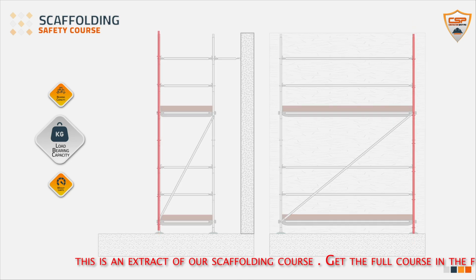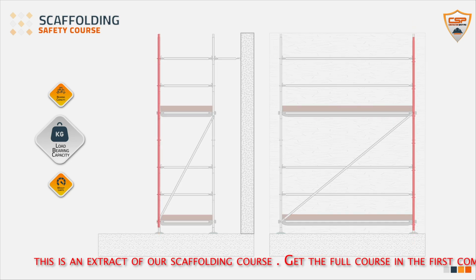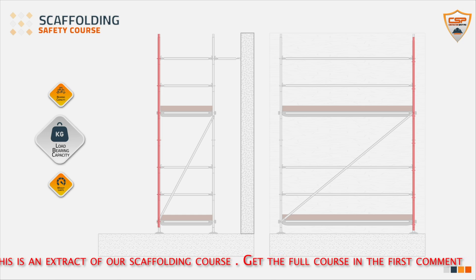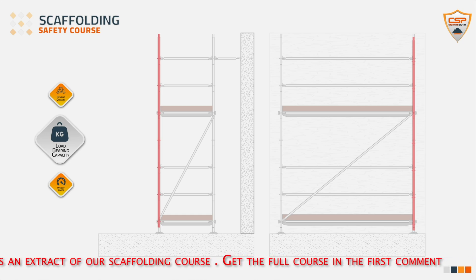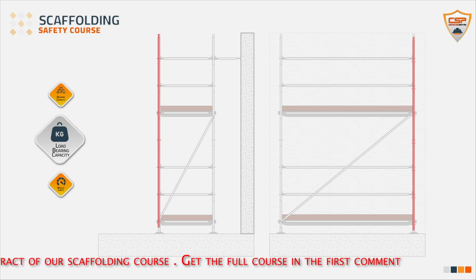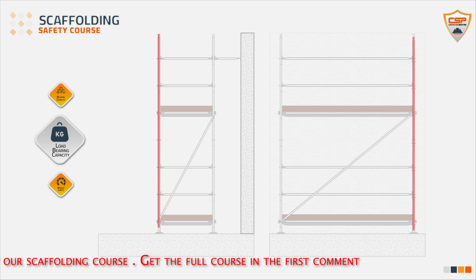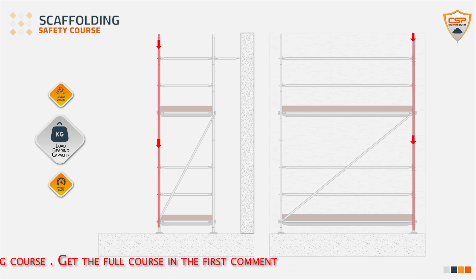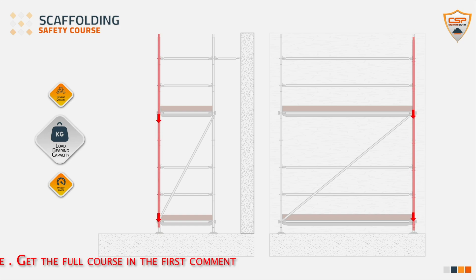Standards — vertical posts. As you may remember from the previous lecture, standards are the vertical tubes of an outer diameter of 48.3 mm and a wall thickness of 3.2 mm. They transfer the weight of the scaffold and its load directly to the ground.